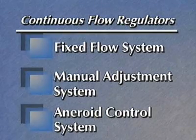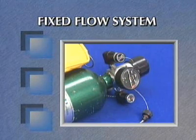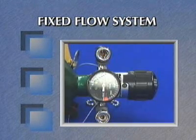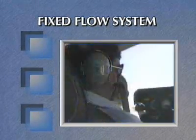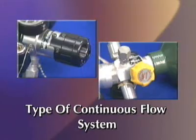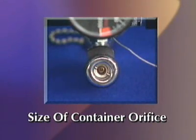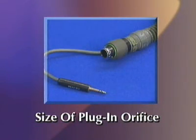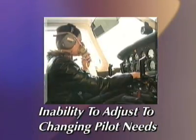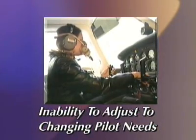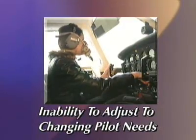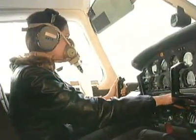There are three types of continuous flow regulators. The fixed flow system delivers oxygen continuously once the system is activated. The amount of oxygen flow is determined by three factors: the type of continuous flow system in use, the orifice size coming out of the container, and the orifice size on the plug-in adapter at the end of the mask hose. The primary disadvantage of a continuous flow system is its inability to adjust automatically to the changing needs of the pilot's level of physical exertion or altitude changes during flight.